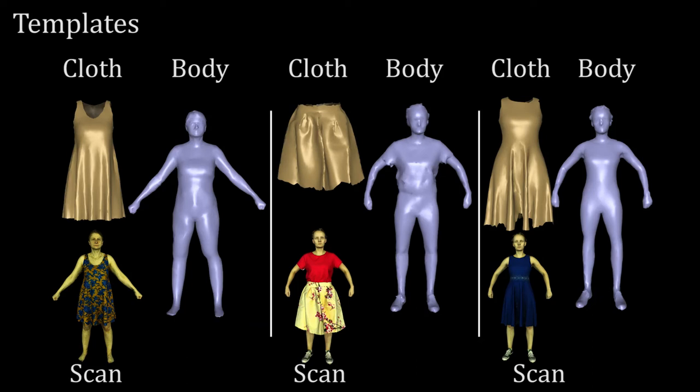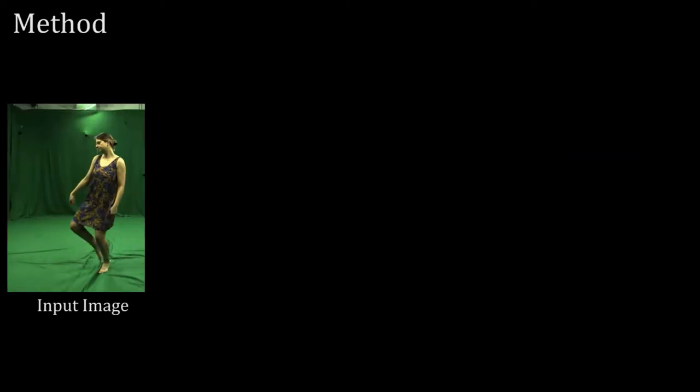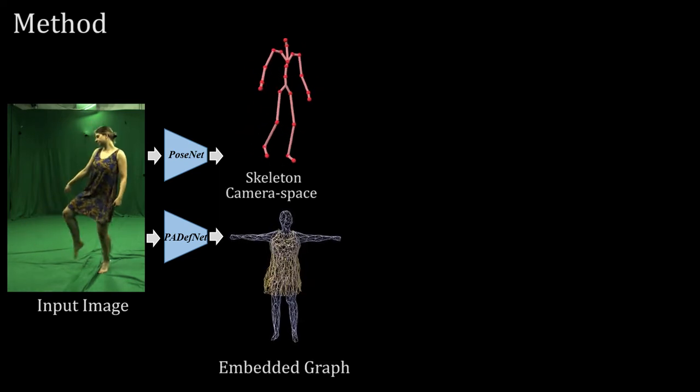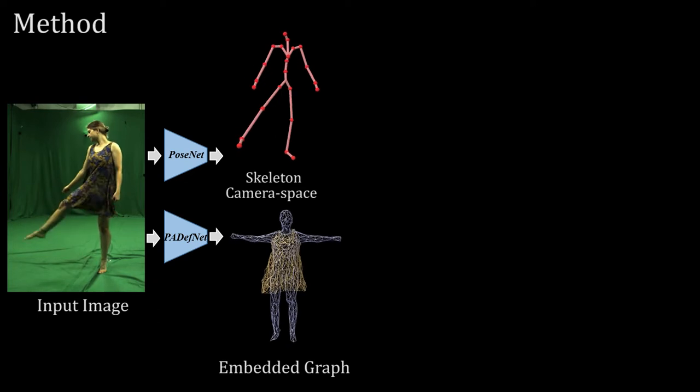To address this issue, we explicitly model cloth and body geometry originating from the scan to enable physics-based simulation during training. Given a single image as input, our two networks, PoseNet and PaDevNet, regress skeletal pose and cloth body deformations, respectively.